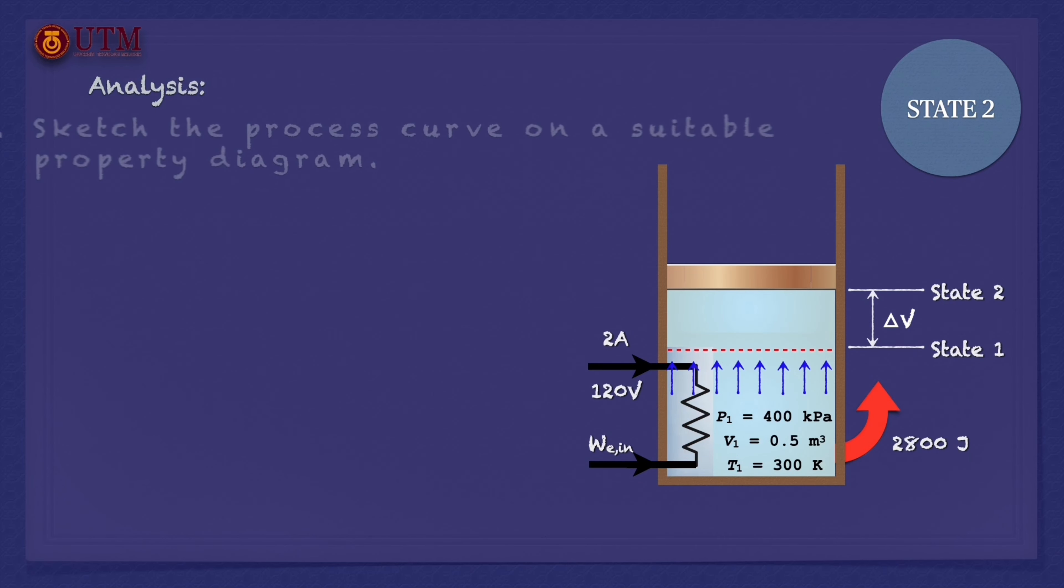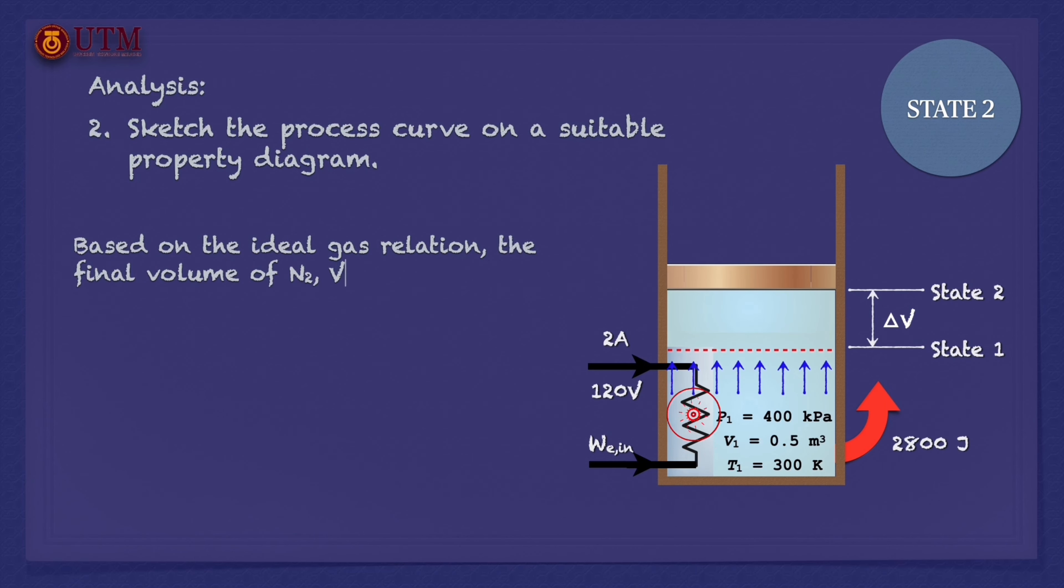The suitable property diagram to be sketched is a PV diagram. Therefore, the only unknown property to complete the PV diagram is the final volume of nitrogen. It can be determined from the ideal gas relation.